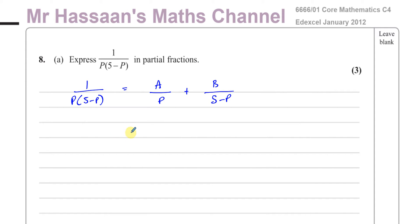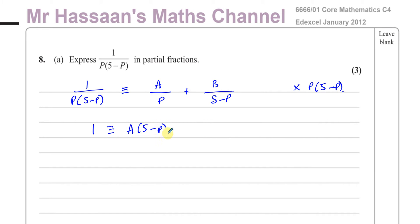To do that, we multiply both sides by the LCM of the denominators, which is P times (5 minus P). This is an identity: multiplying through cancels terms, leaving 1 on the left, A times (5 minus P) from the first fraction, and B times P from the second. We now need to find the values of A and B.